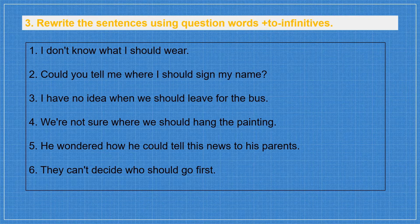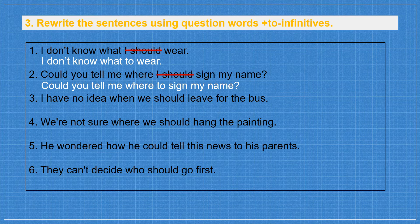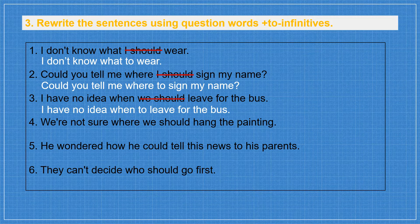Now rewrite these sentences using question words plus 'to-infinitives'. Number 1: 'I don't know what I should wear' → 'I don't know what to wear.' Number 2: 'Could you tell me where I should sign my name?' → 'Could you tell me where to sign my name?' Number 3: 'I have no idea when we should leave for the bus' → 'I have no idea when to leave for the bus.' Number 4: 'We are not sure where we should hang the painting' → 'We are not sure where to hang the painting.'